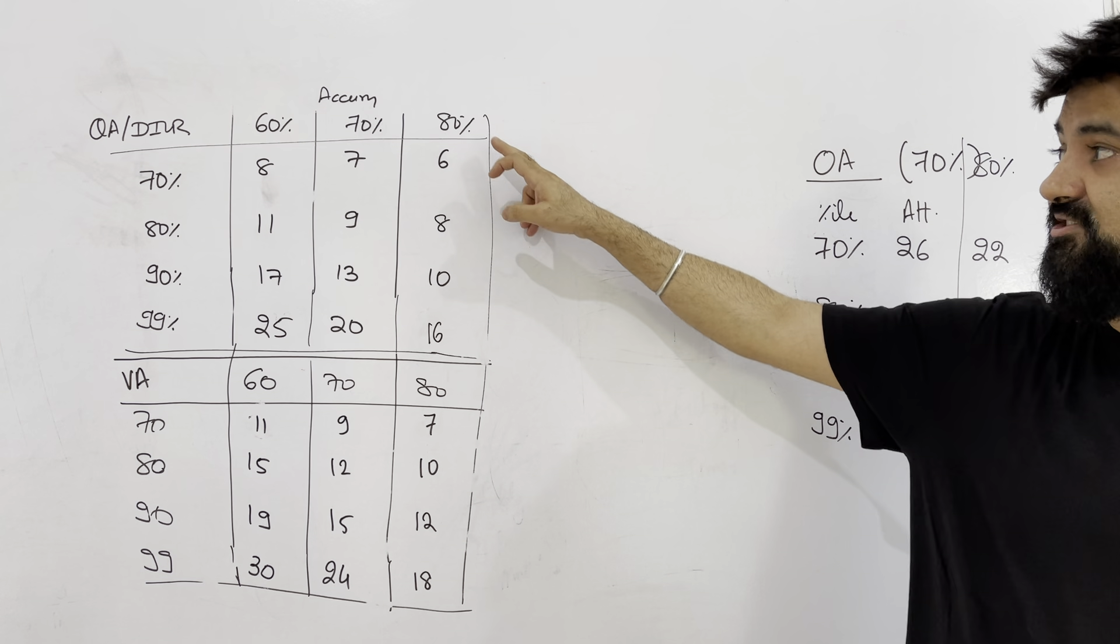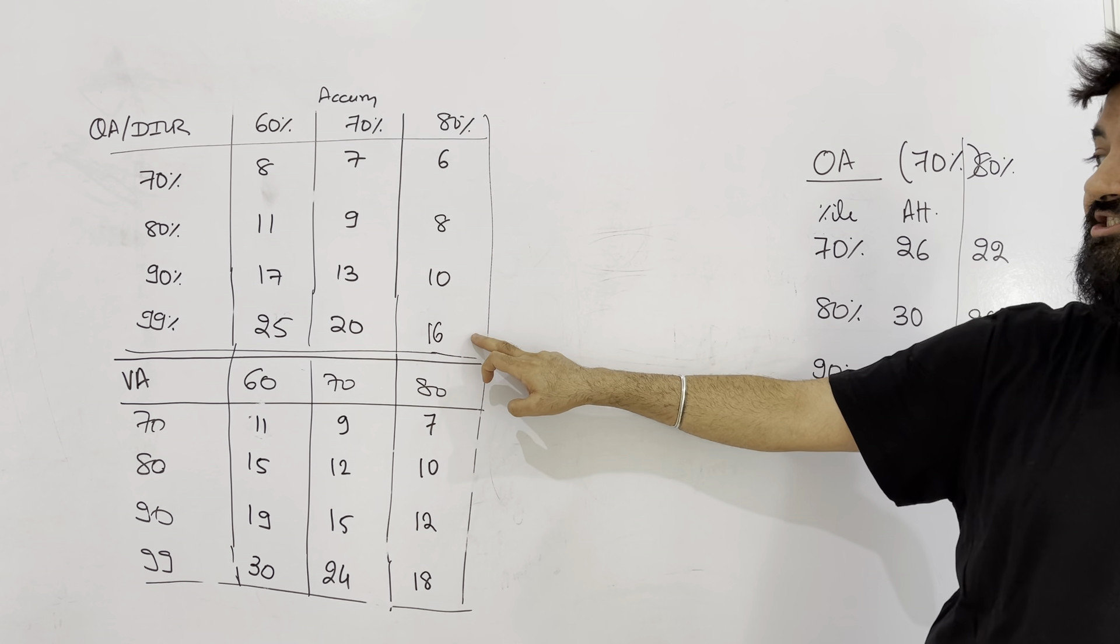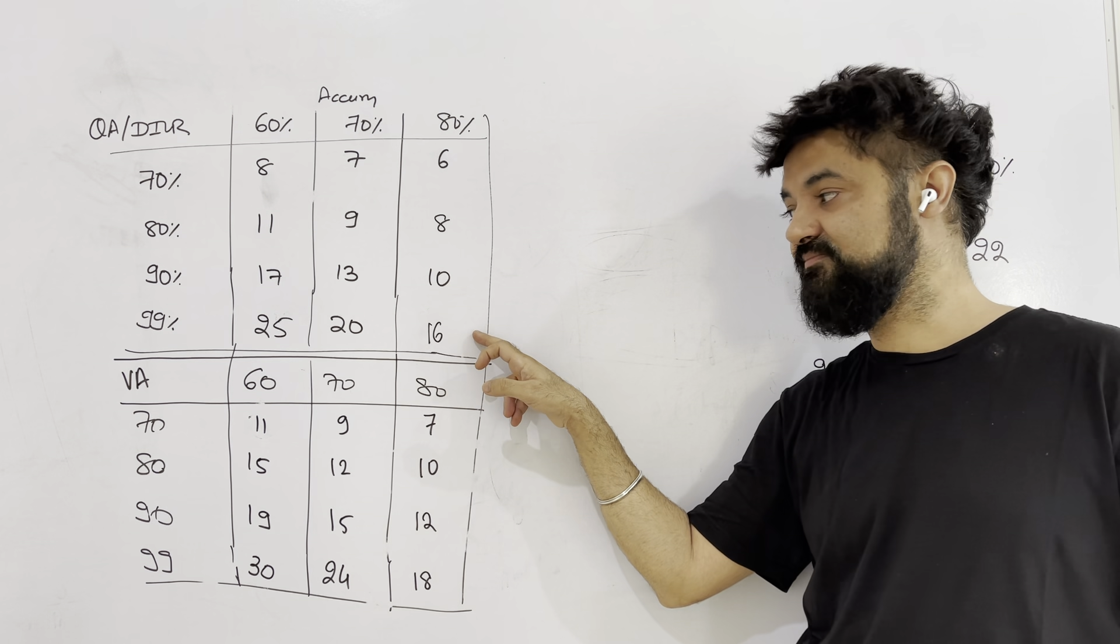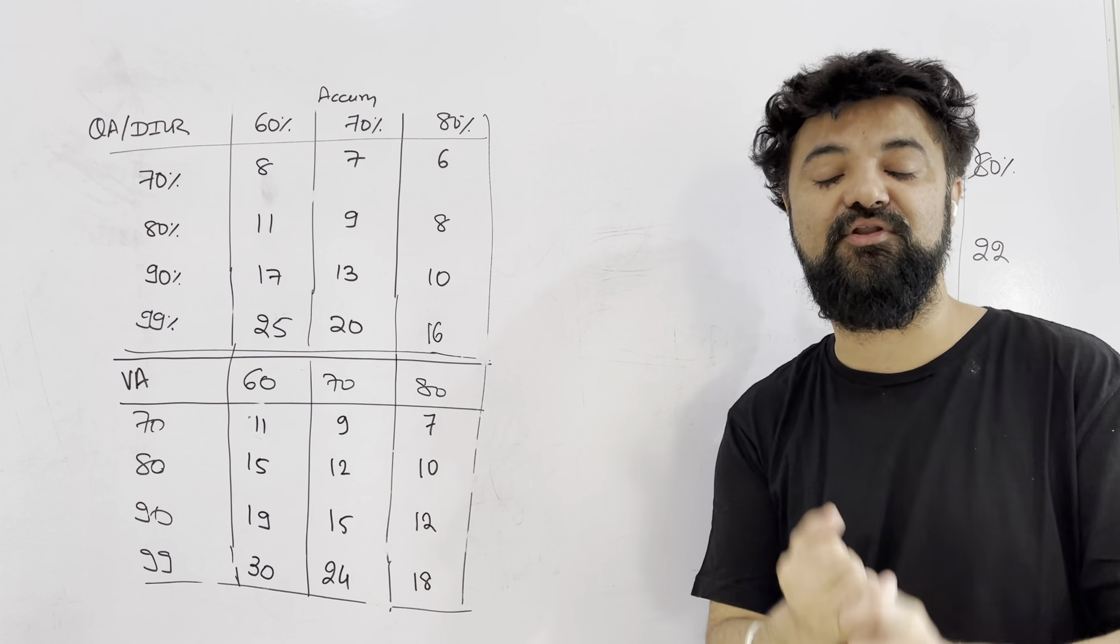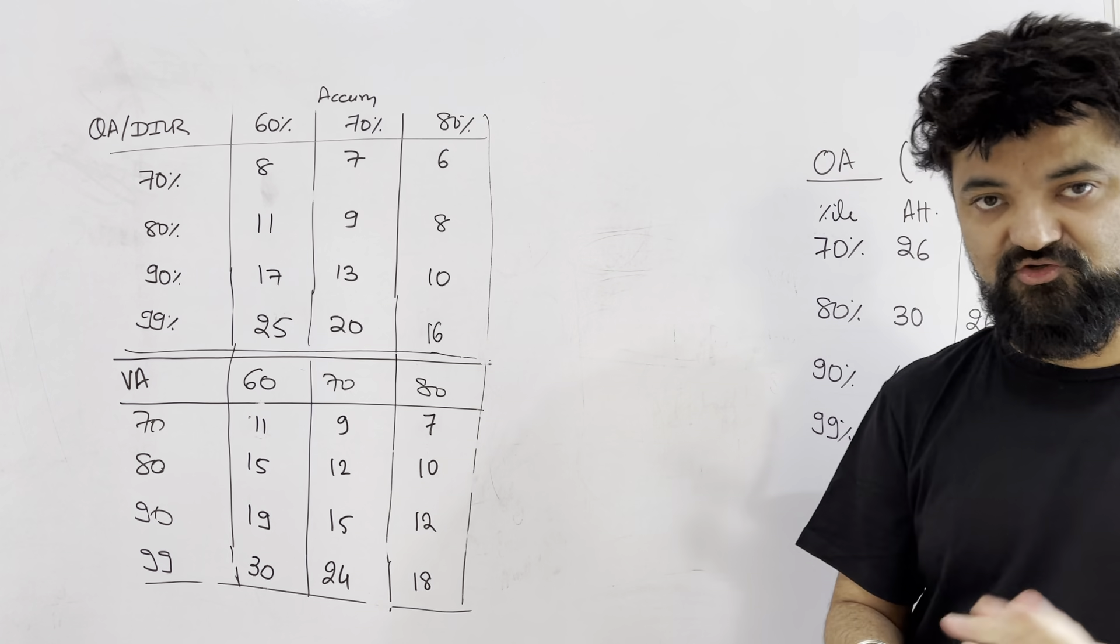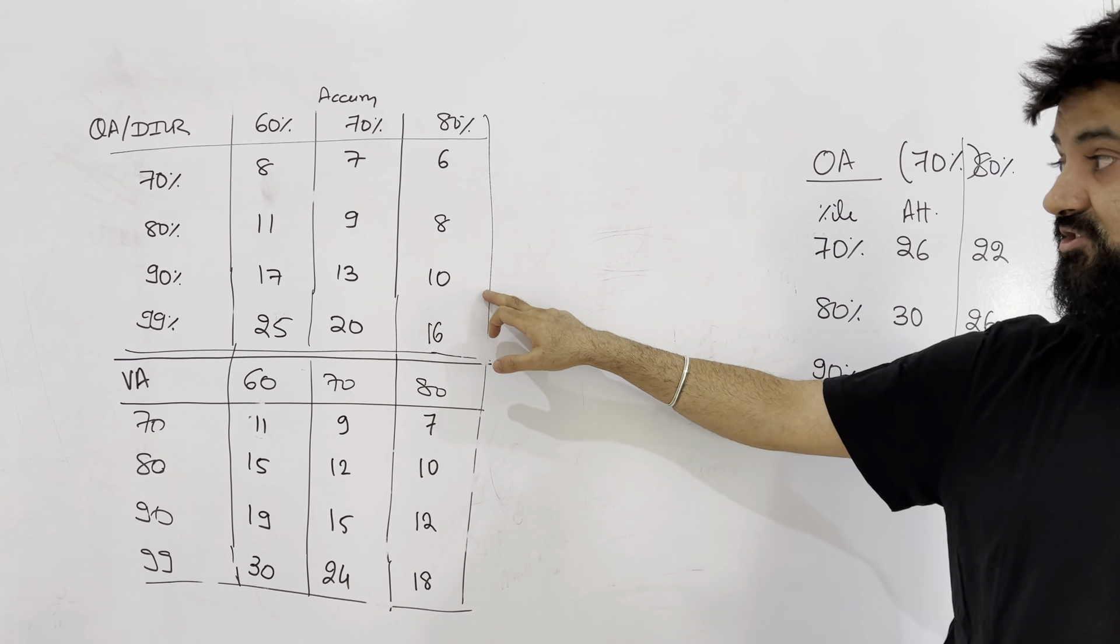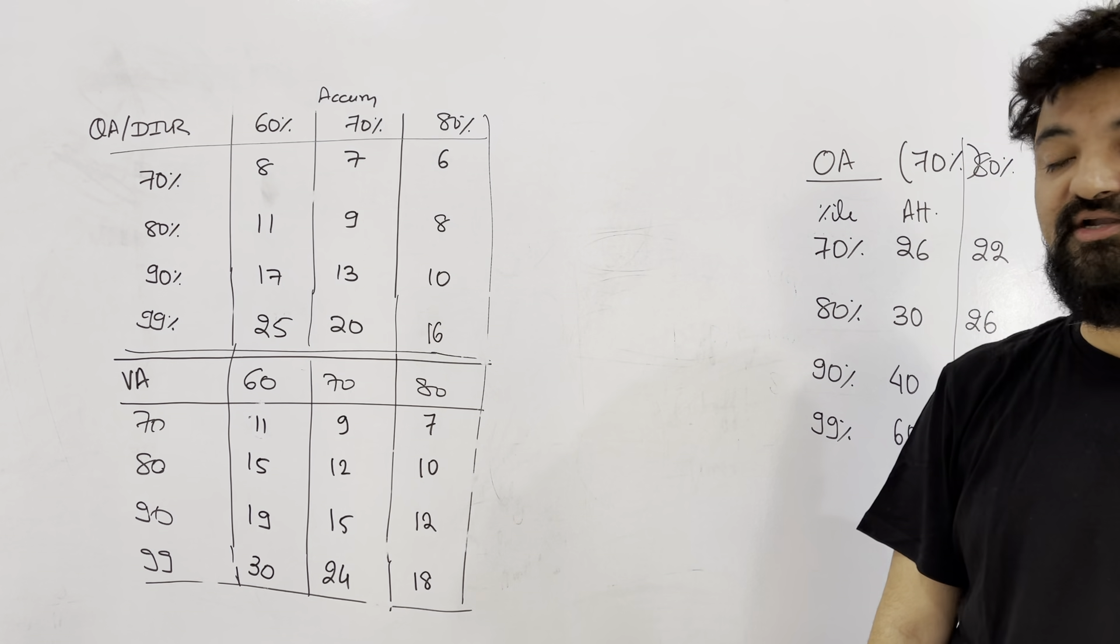So if your accuracy is suppose 80 percent, you need 16 question attempt is more than sufficient for 99 percentile. 16 question but correct set karo with 80 percent accuracy, you are getting 99 percentile. You will touch 99. 10 question, 8 question. So you can make up your chart here for quant and DI.